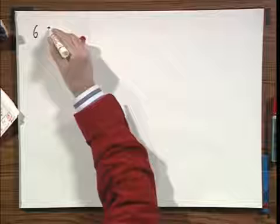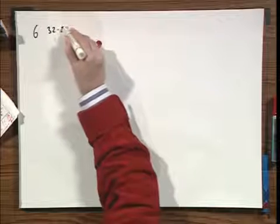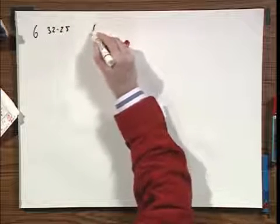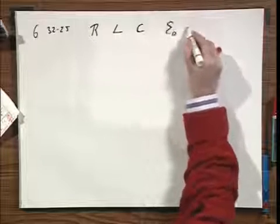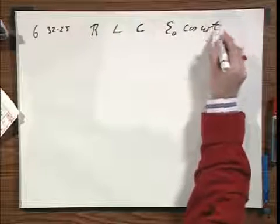And so this brings us now to problem number six, which is 32.25. Believe it or not, again we have an R, we have an L, we have a C, and we have an E zero cosine omega T.